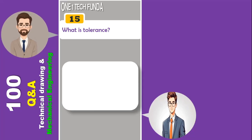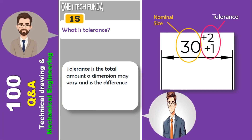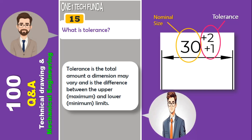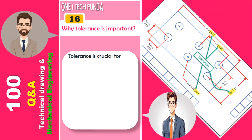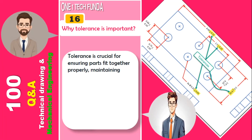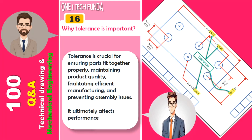What is tolerance? Tolerance is the total amount a dimension may vary and is the difference between the upper and lower limits. Tolerance is crucial for ensuring parts fit together properly, maintaining product quality, facilitating efficient manufacturing, and preventing assembly issues. It ultimately affects performance and product reliability.